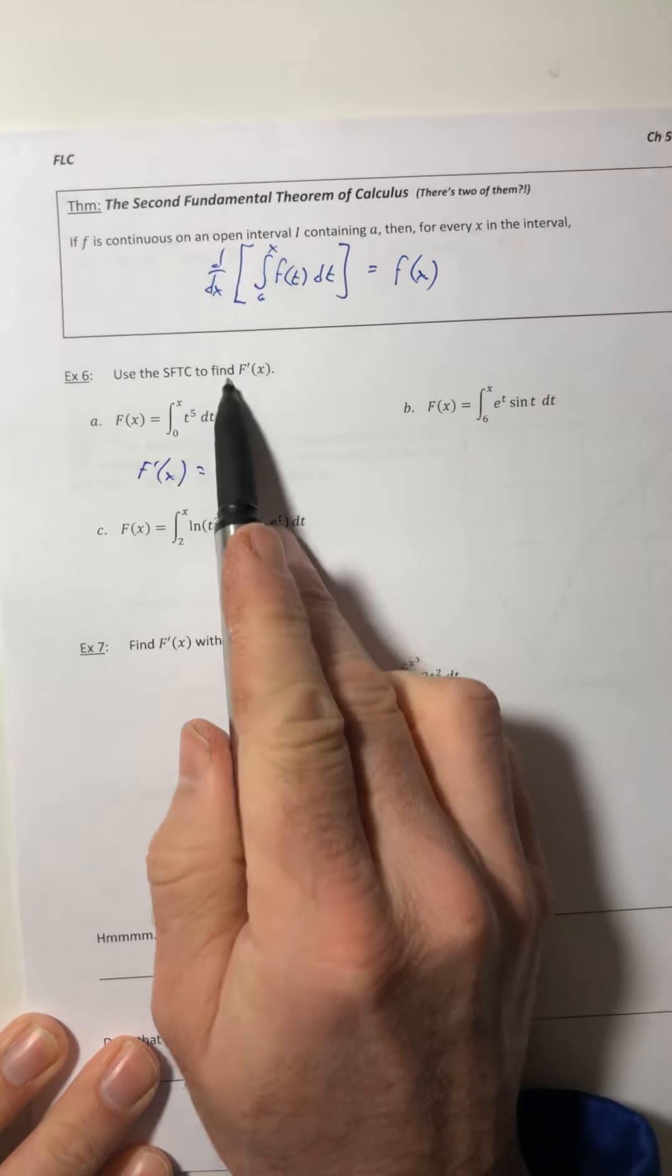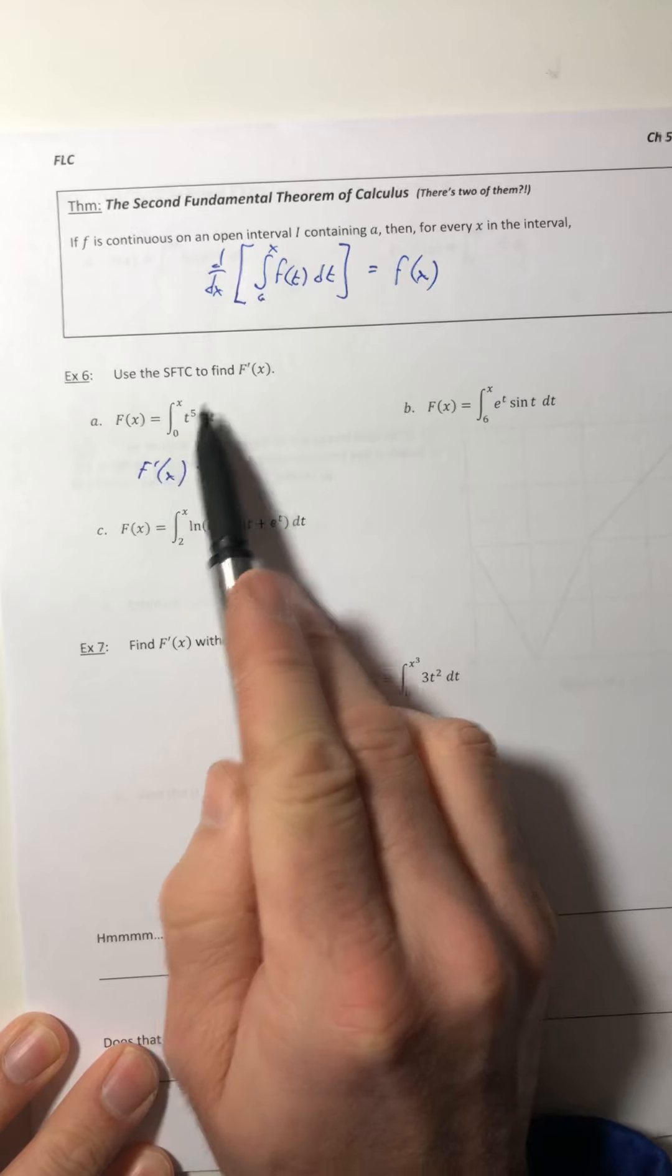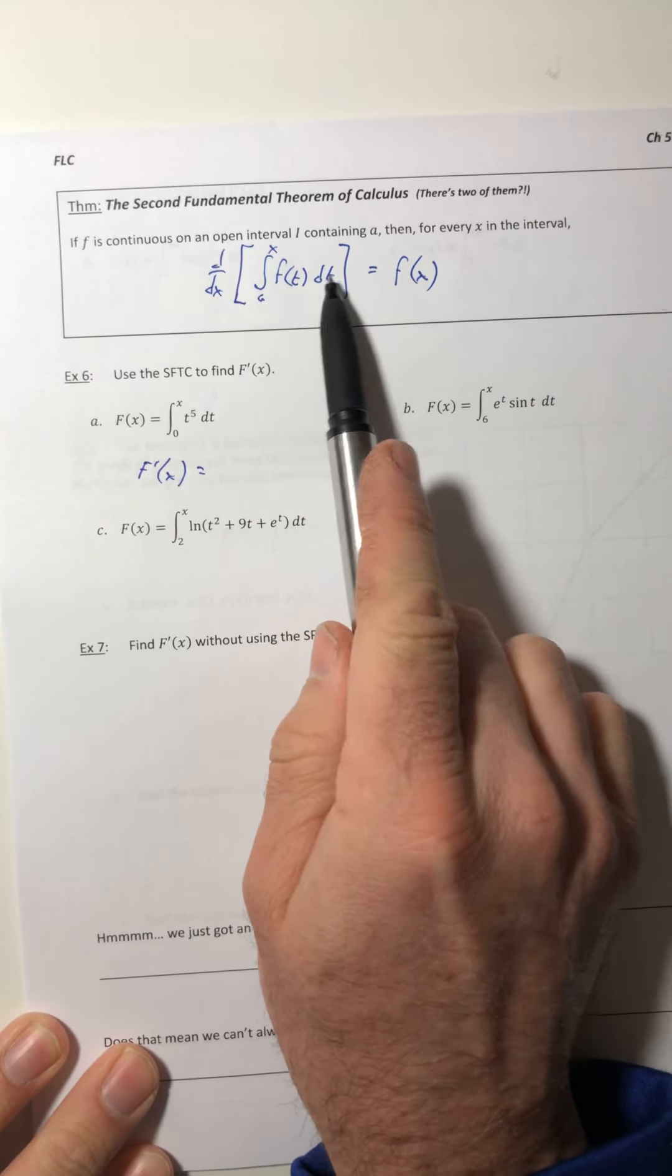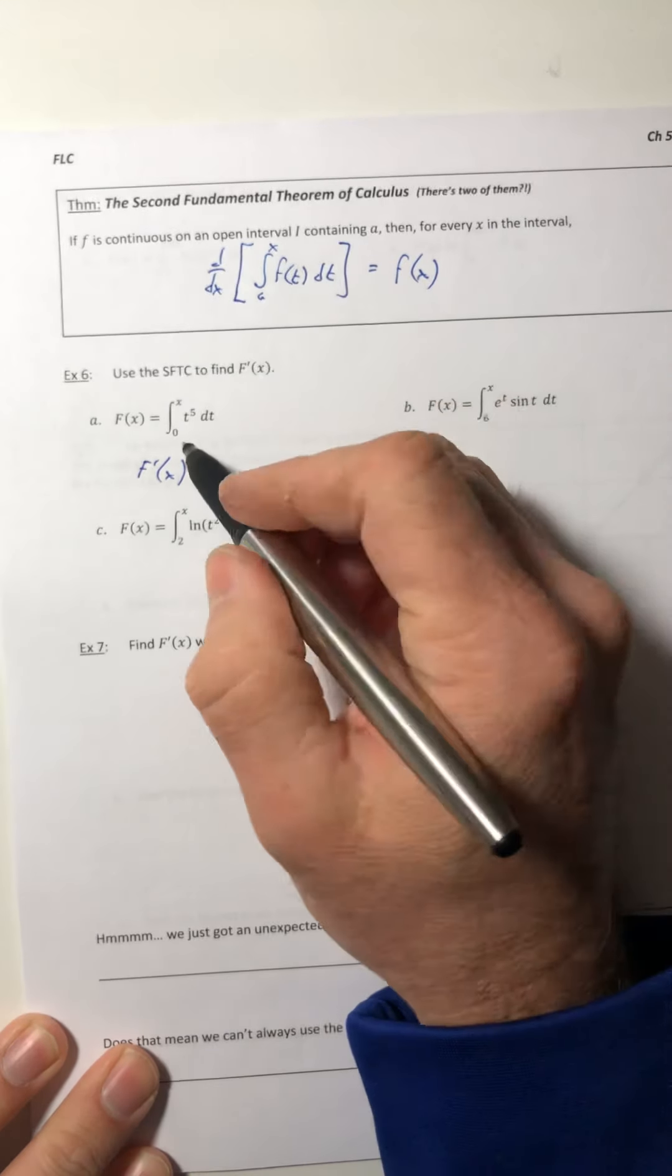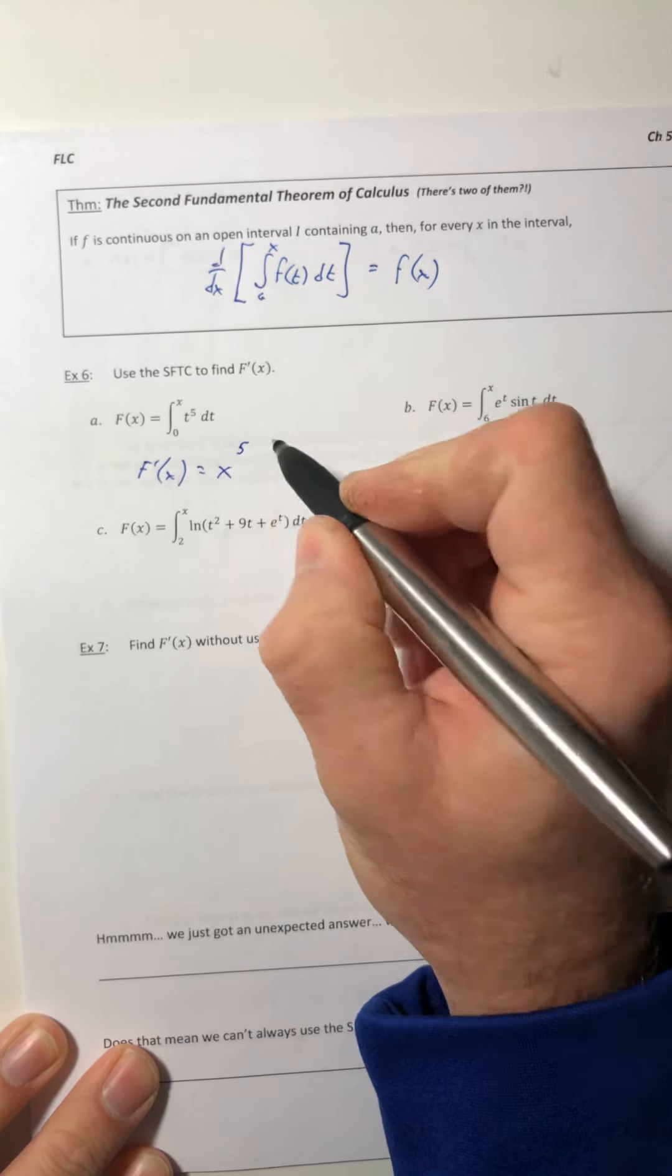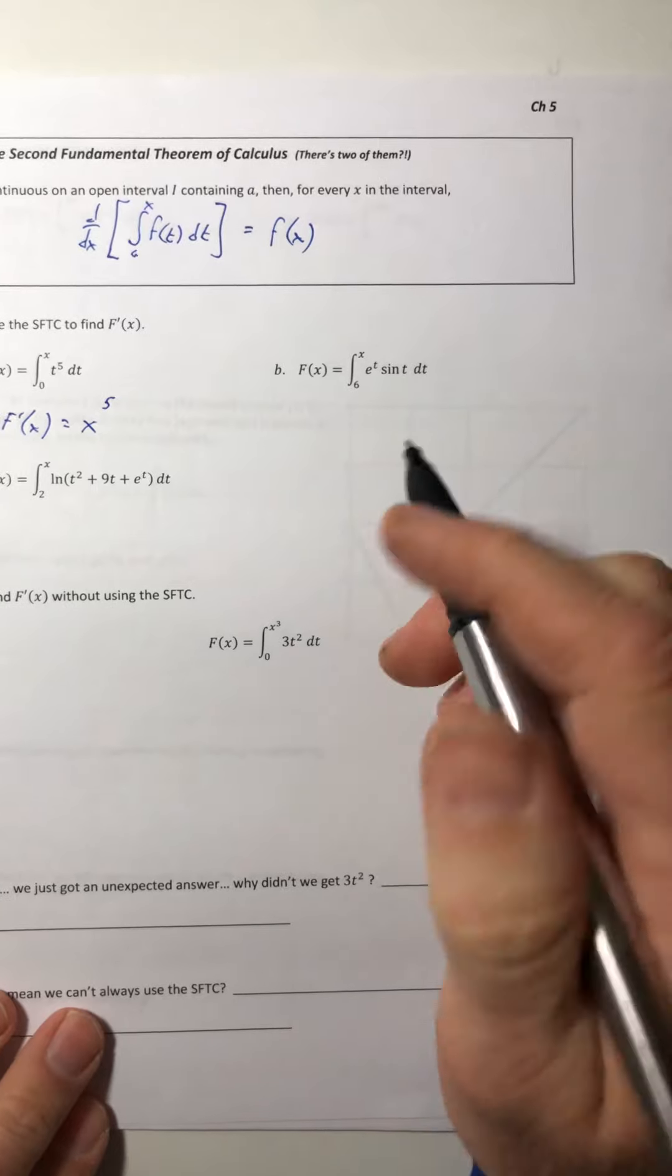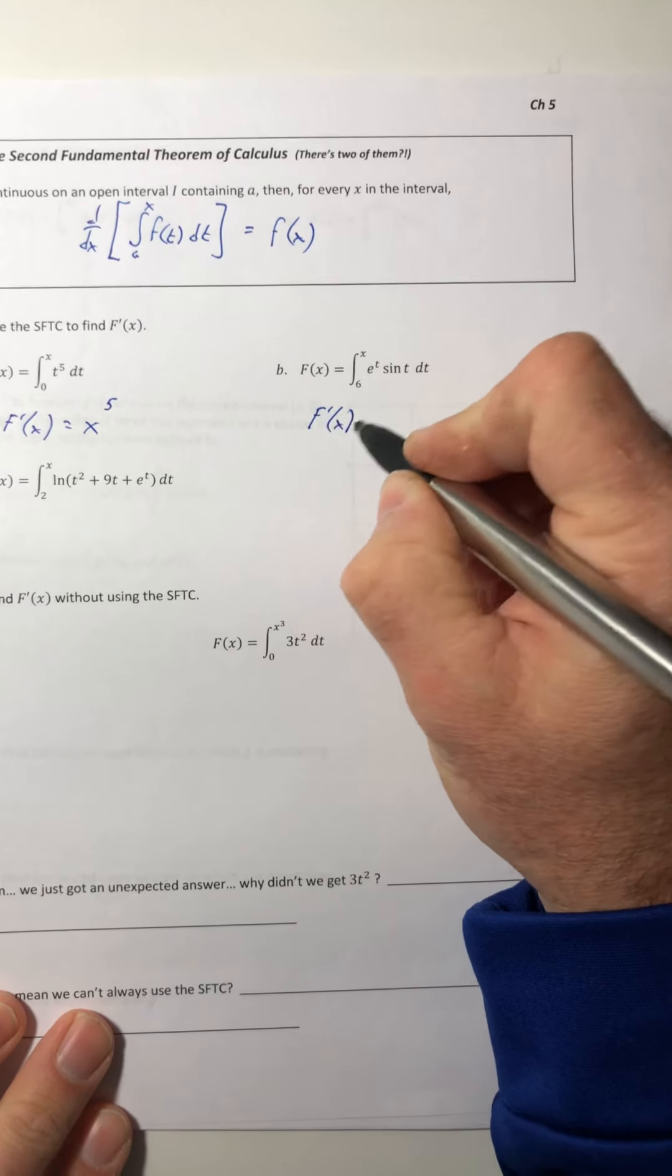So we're going to use the theorem to find the derivative of each of these. Just do exactly as the theorem says. It says, hey, take your original function, replace the variable with that upper bound. So we're going to take the t and replace it with x and we get x to the fifth. Ta-da.